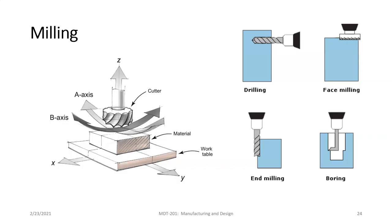Moving on to milling. A milling operation can include drilling, face milling, end milling, and boring. In end milling, we're cutting along the perimeter or periphery of the tool. In drilling, the tool is designed to cut on the end rather than the periphery. In the milling operation, the workpiece sits on a work table that can move in the X and Y direction — two degrees of freedom. The tool can move in the Z direction — a third degree of freedom. In some cases we can also rotate along what's called the B axis or the A axis, the axes perpendicular to the X and Y directions.